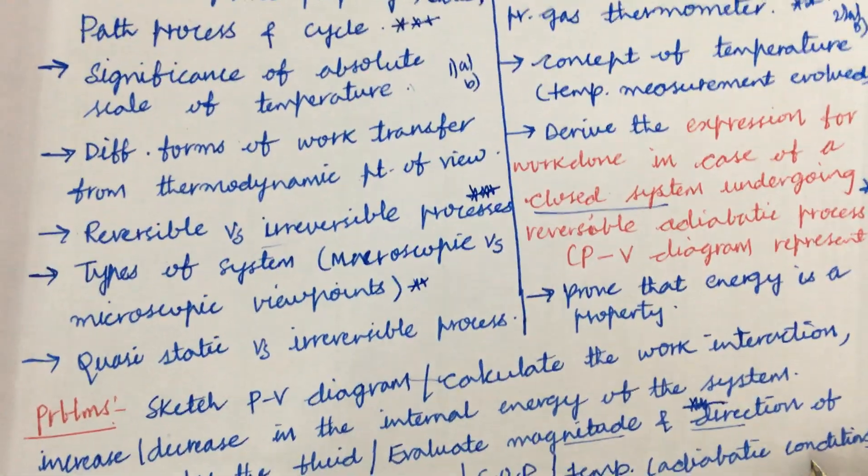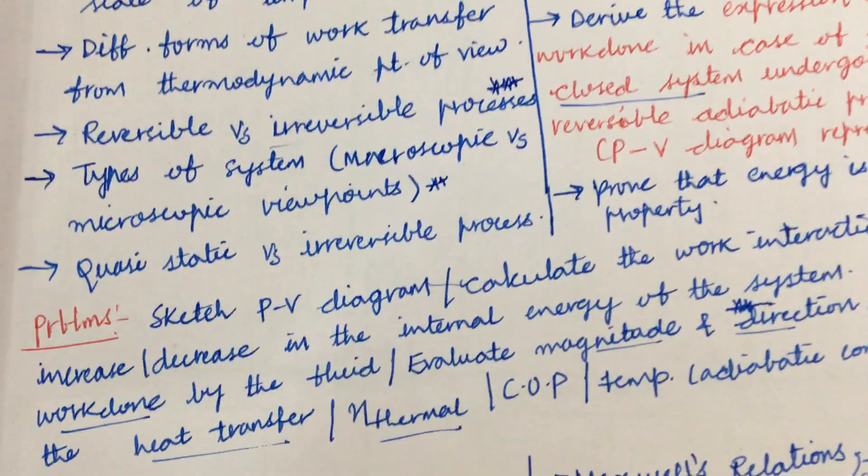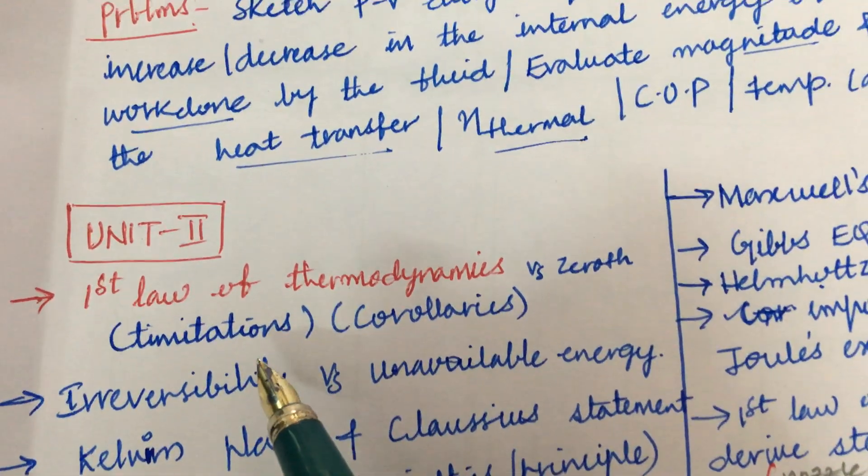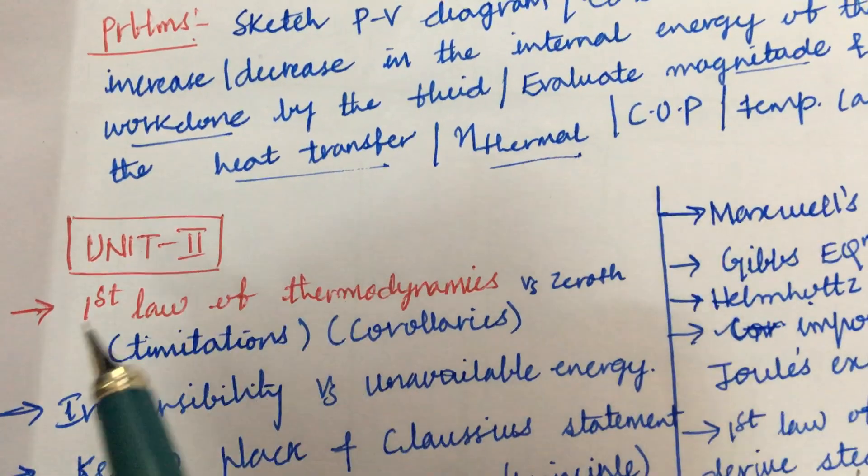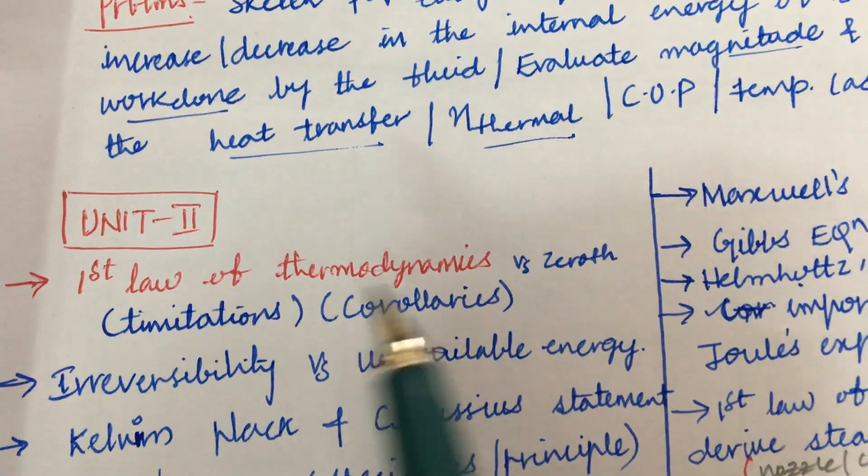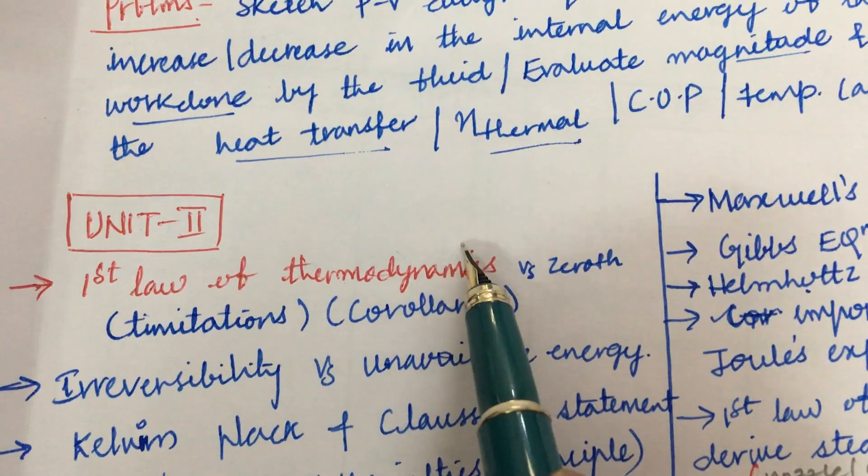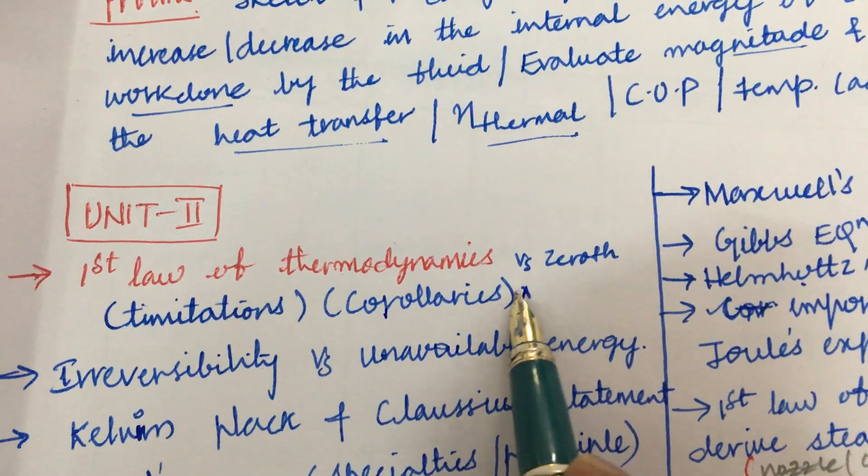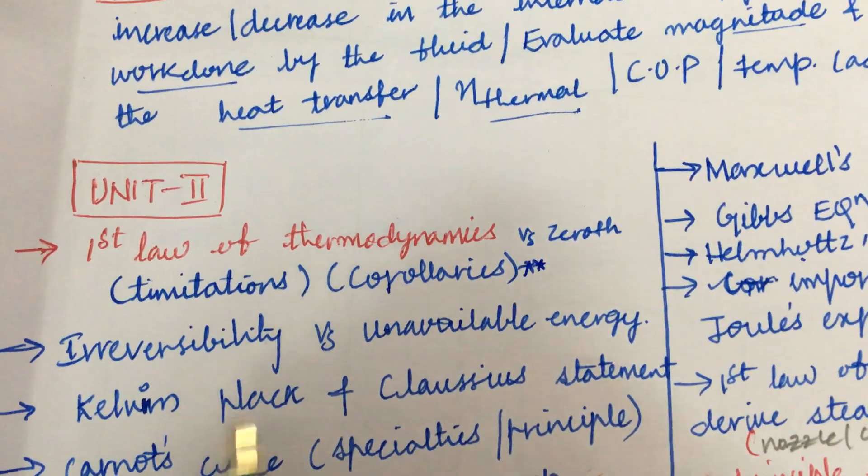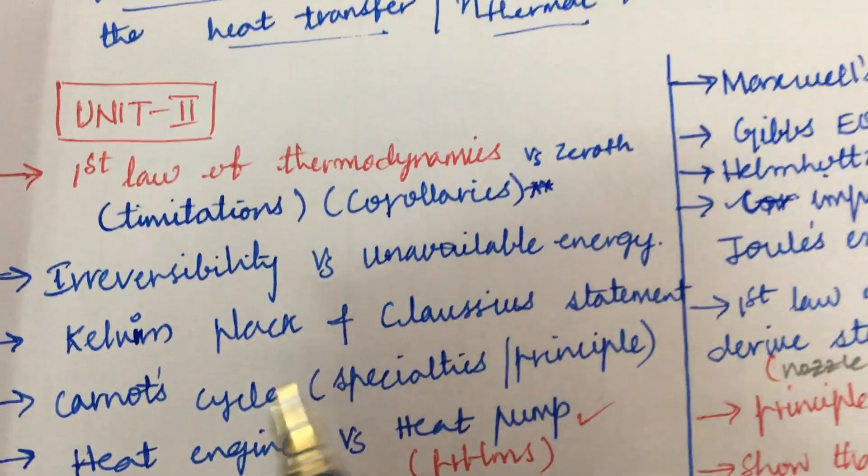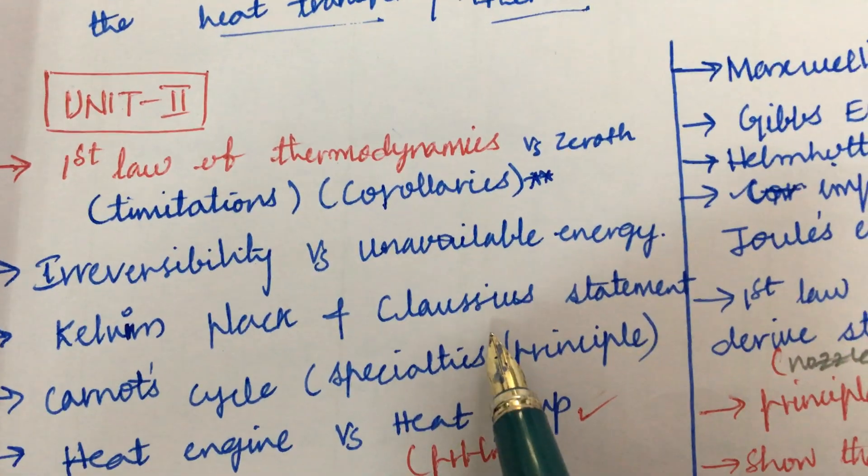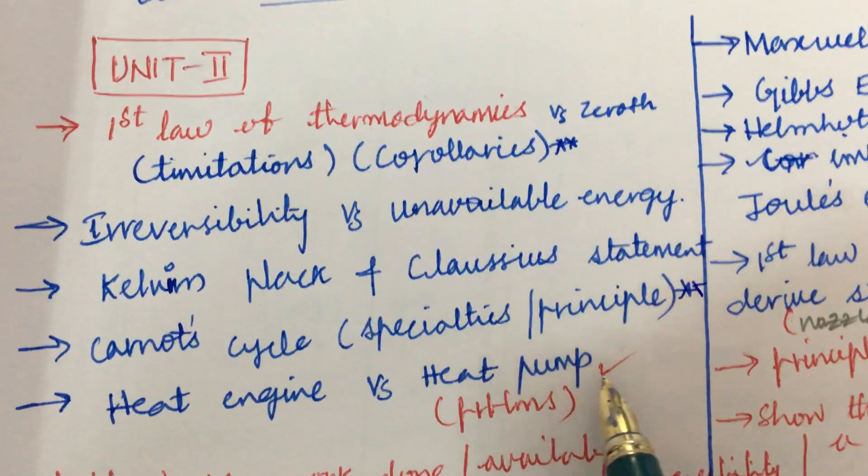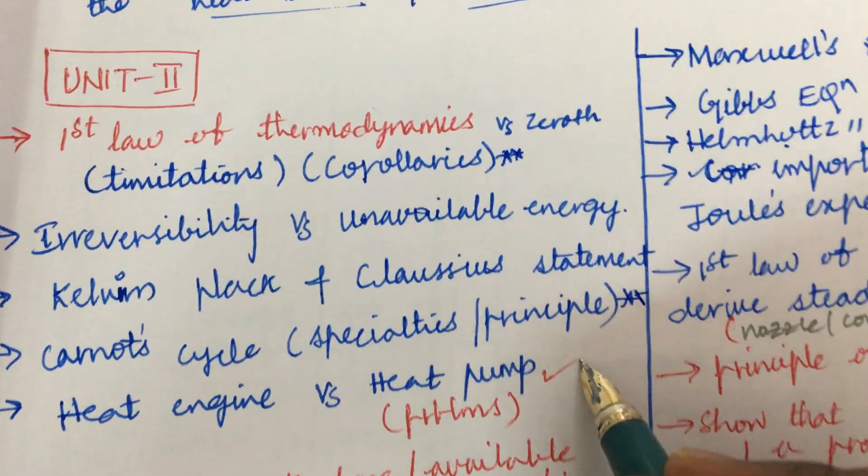These all are very important. I am going to highlight only very few points even in unit two also, where third and fourth question will be covered in the first law of thermodynamics and the differences of zeroth and first law. And all the laws of thermodynamics may be also asked sometimes and its limitations, as well as corollaries of these first law of thermodynamics. Irreversibility versus unavailable energy and Kelvin-Planck as well as Clausius statement, and the Carnot cycle is also very important, and heat engine versus heat pump and the problems related to it.